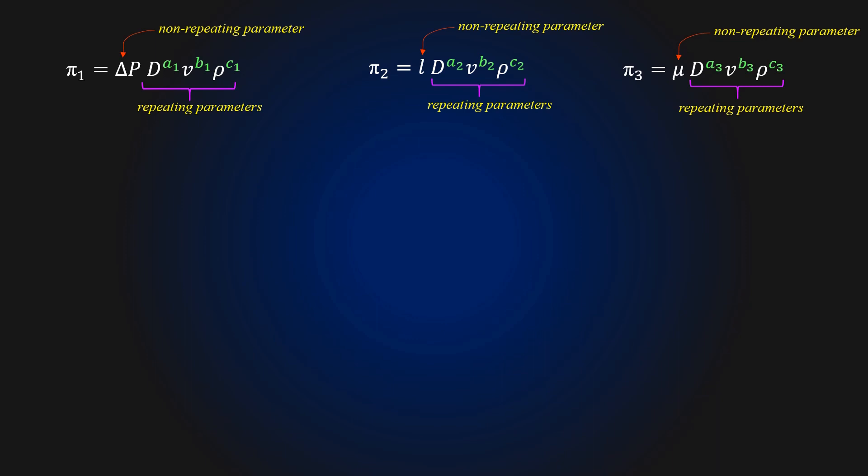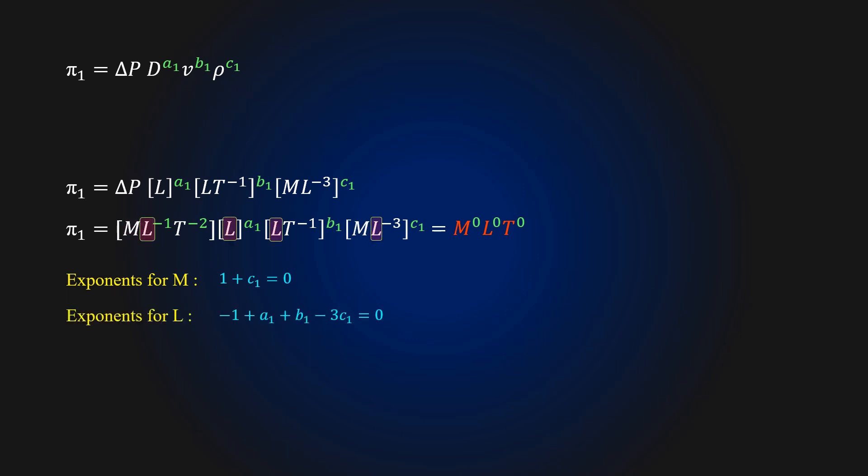In step five, we construct the pies and assign exponents a1, b1 and c1 to the parameters of pi1, a2, b2 and c2 to the parameters of pi2 and a3, b3, c3 to the parameters of pi3. Now we write the parameters in pi1 in terms of their primary dimensions. Since the pi1 expression should be dimensionless, equate exponents of the primary dimensions of these parameters to 0. The equation for exponents of mass is given as, the equation for exponents of length is given as, the equation for exponents of time is given as. On solving we get c1 equal to minus 1, b1 equal to minus 2 and a1 equal to 0.